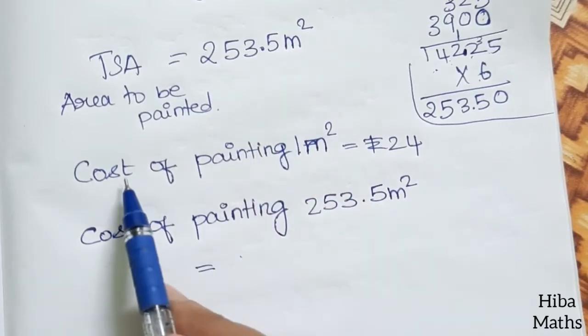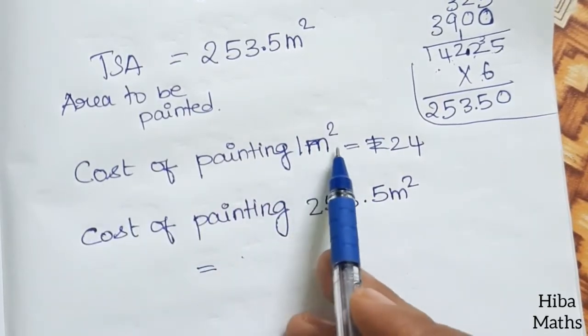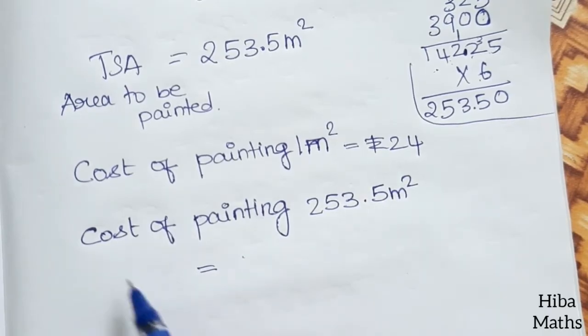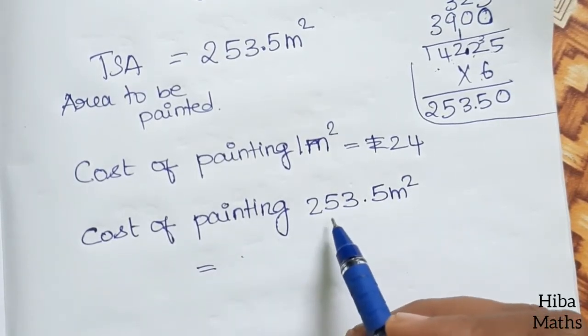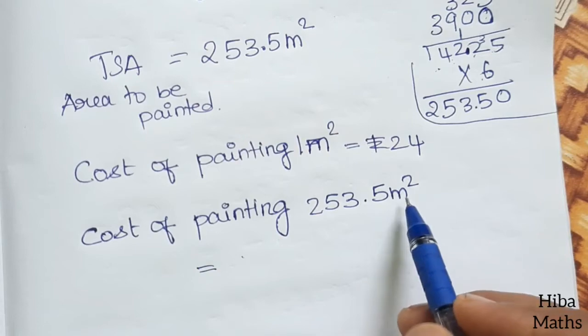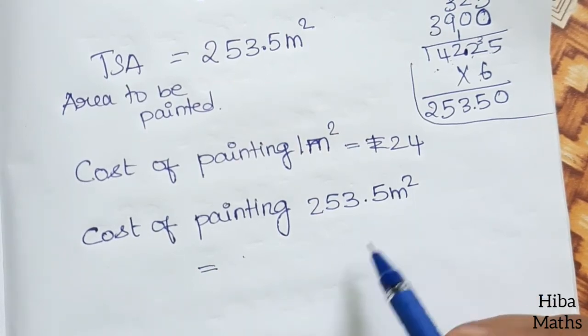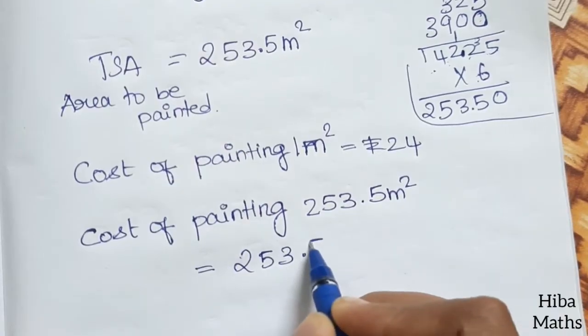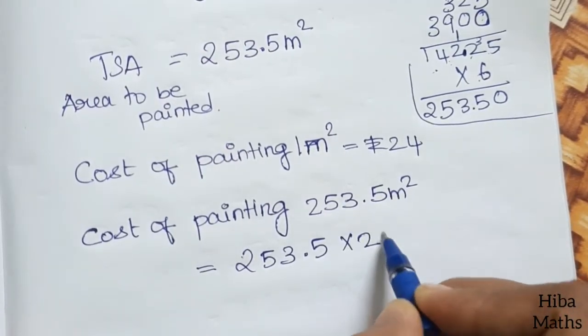Cost of painting 1 meter square is ₹24. Cost of painting 253.5 square meters equals 253.5 times 24.